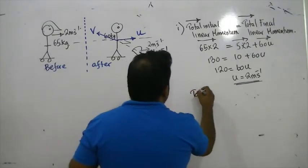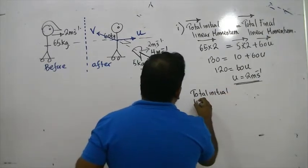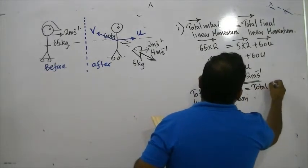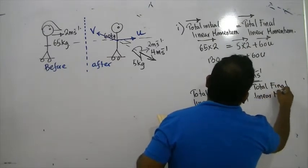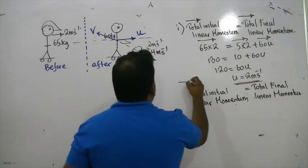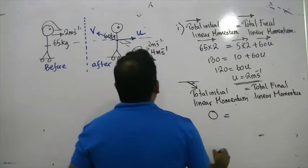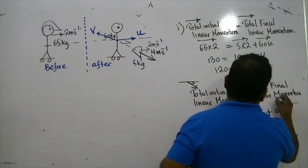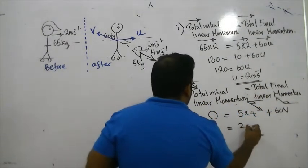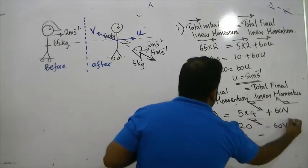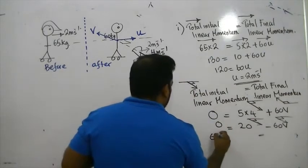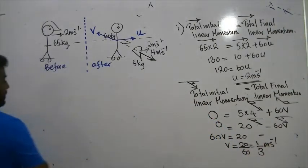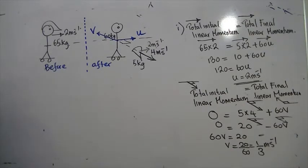Now apply the same conservation law in the perpendicular direction. Total initial linear momentum equals total final linear momentum in the perpendicular direction. Initial momentum is 0. Final momentum is 5 times 4 in one direction, and 60 times V in the opposite direction. Bringing both vectors to the same direction: 60V = 20, so V equals 20 over 60, which is 1/3 meters per second.